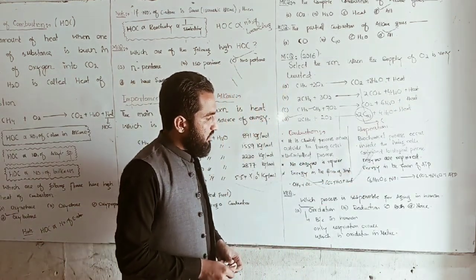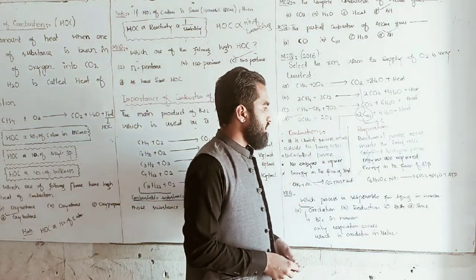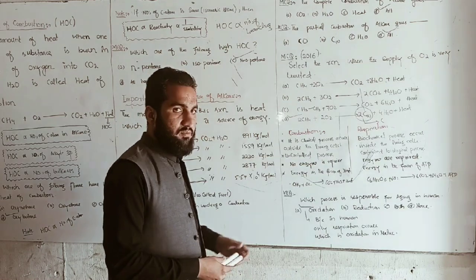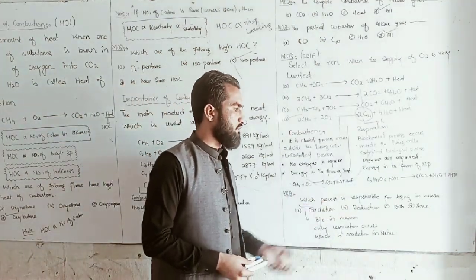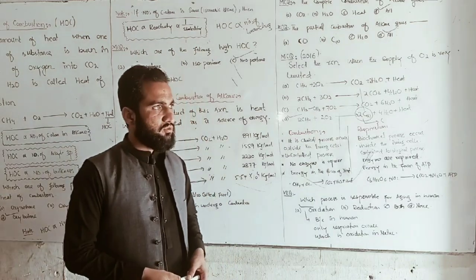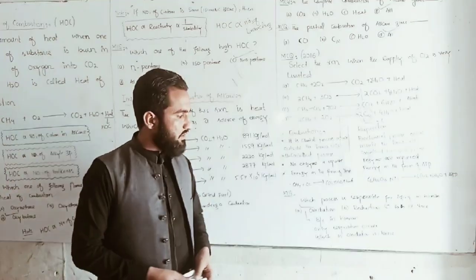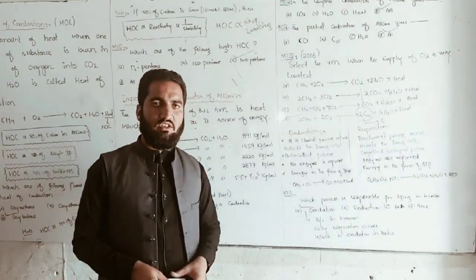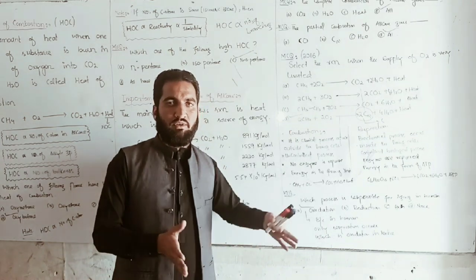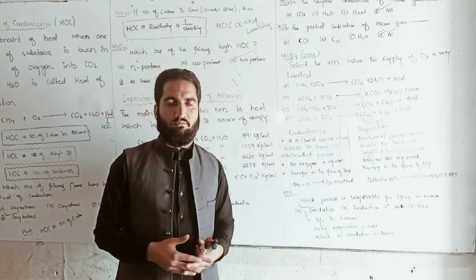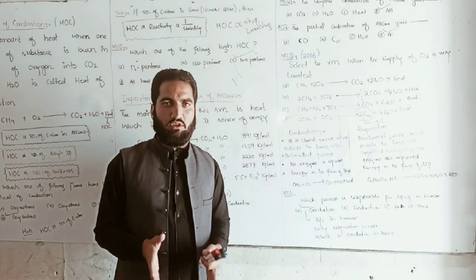MCQ: Which process is responsible for aging in humans? Option A: oxidation. Option B: reduction. Option C: growth. Option D: photosynthesis. The correct answer is oxidation (respiration), because in humans only respiration occurs, which is an oxidation process. In plants, both photosynthesis and respiration occur.